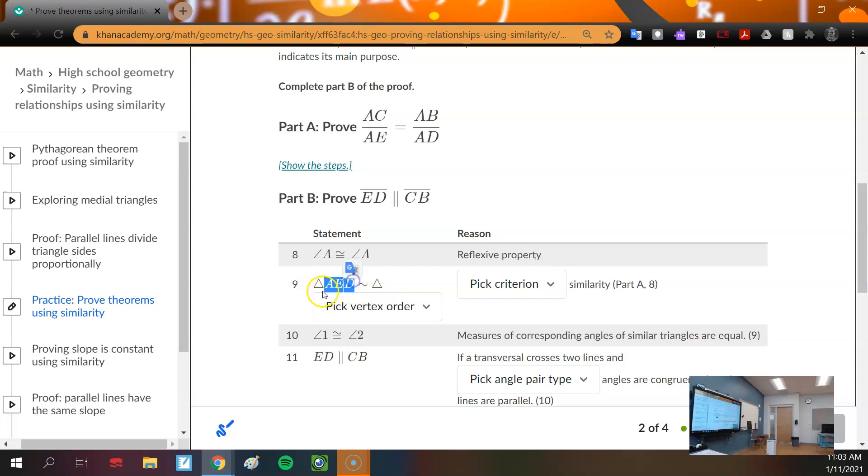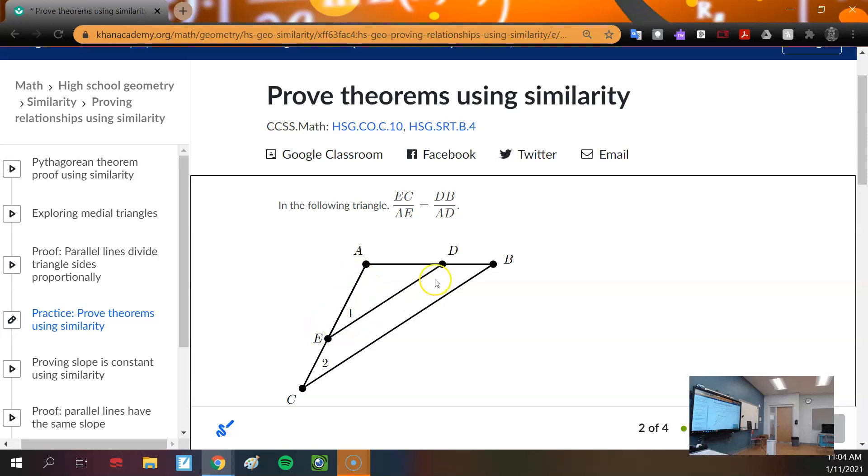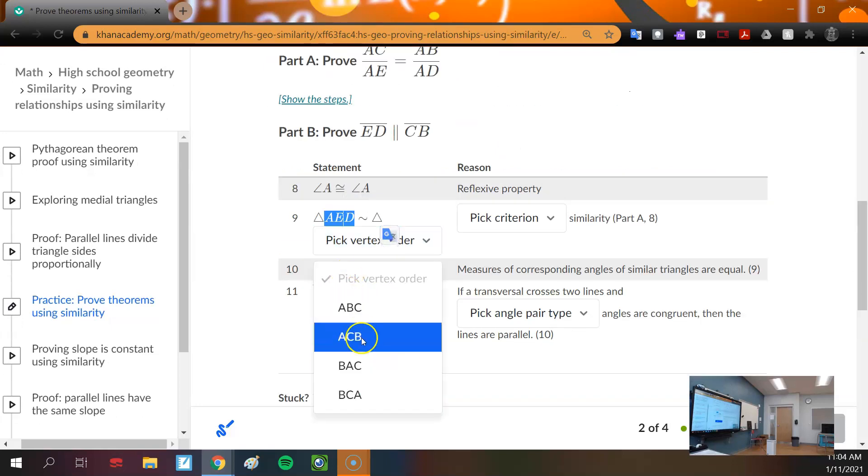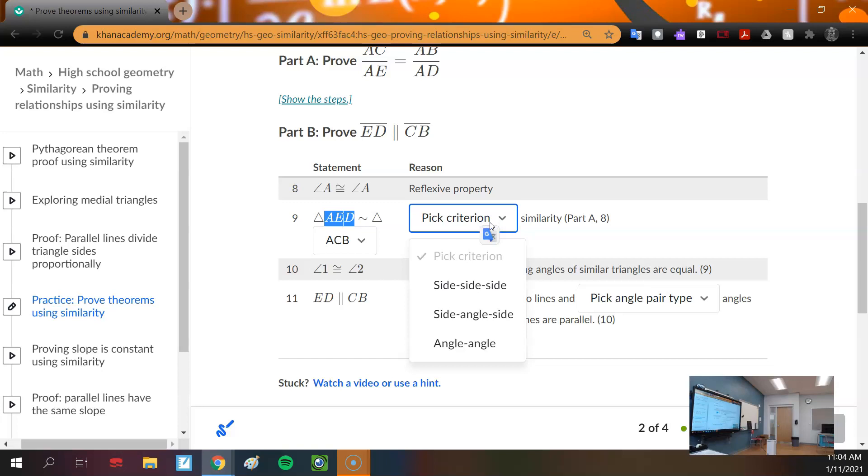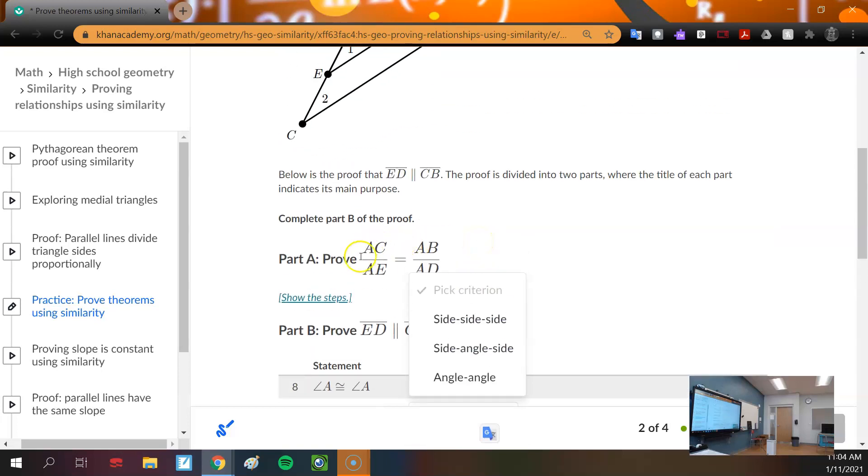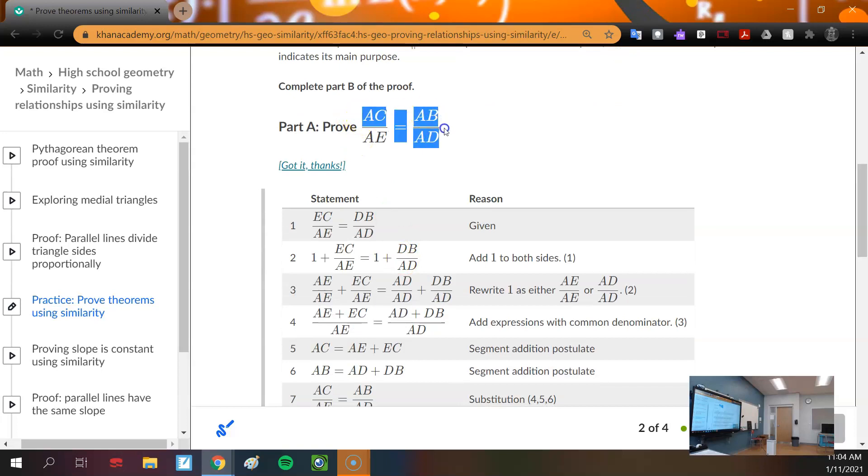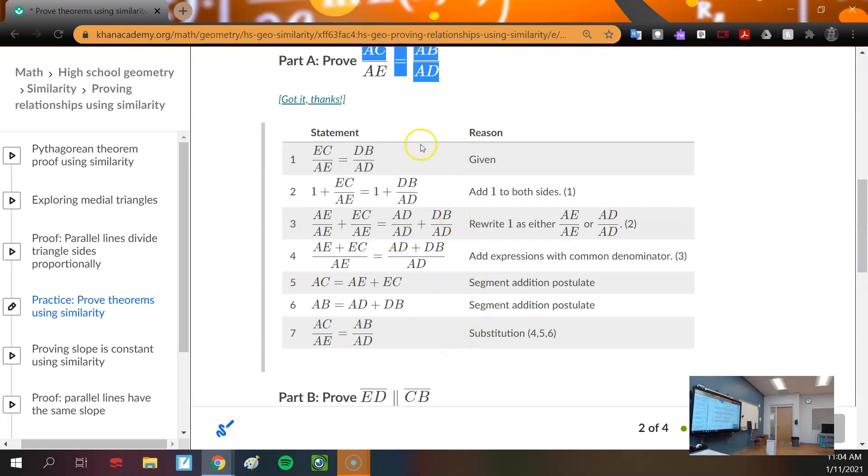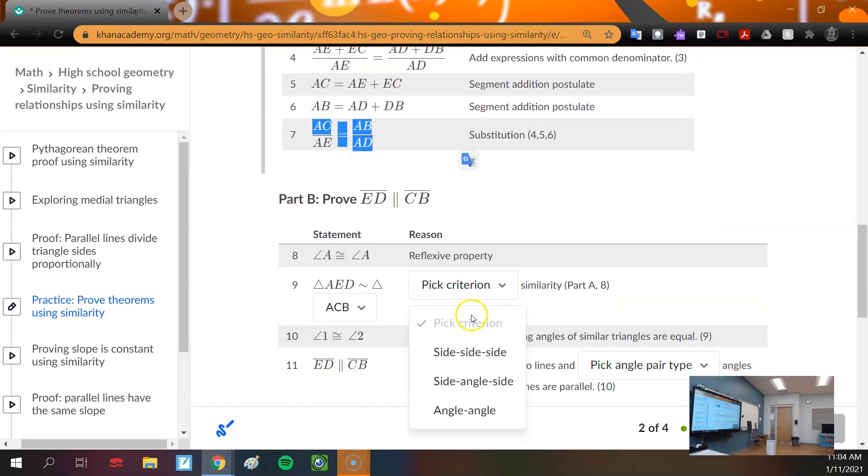But then triangle AED is similar. They're not saying angle, they're saying triangle. So if it's AED, should it be ACB or ABC? ACB, right? So pick vertex order ACB. Pick criterion, why? Why are we allowed to say that? Our beginning steps prove these ratios. And if we want to see how, remember, we're just learning how to do proofs right now. They're not making us do the whole thing. We use substitution here and we get to this common ratio. So since we have that, it looks like we're allowed to use side angle side, because they did the sides and then we did the angle.